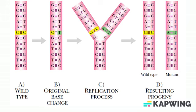DNA molecules are double-stranded. If a mutation occurs and a single base is replaced with another, the DNA molecule will temporarily contain a pair of mismatched bases.